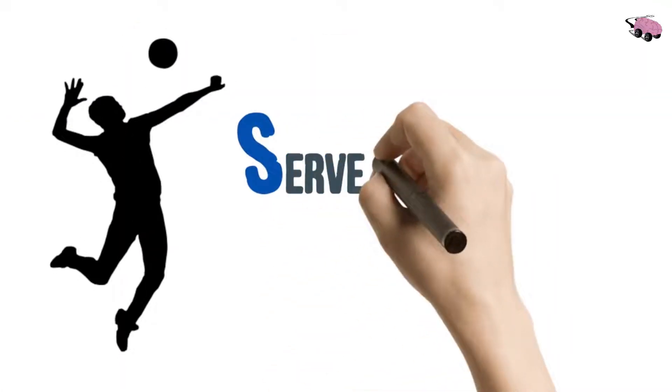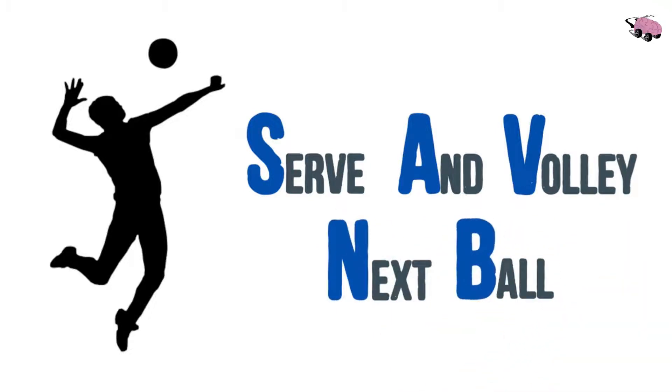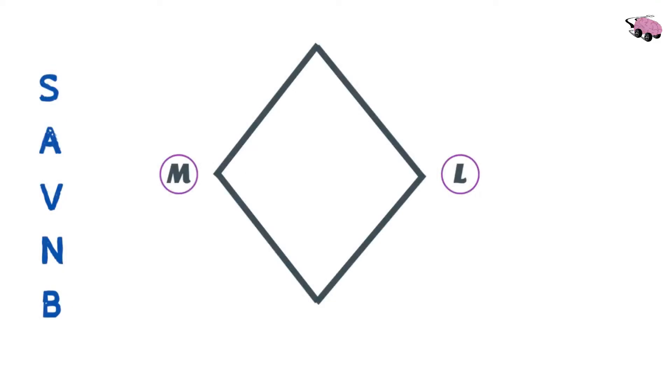We'll use the mnemonic serve, and, volley, next, ball. This mnemonic will cover the borders and the contents of the popliteal fossa. We'll introduce our diamond-pop fossa again. We'll highlight all the first letters.